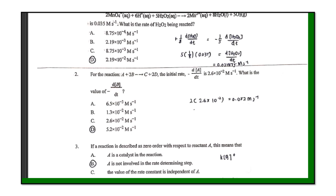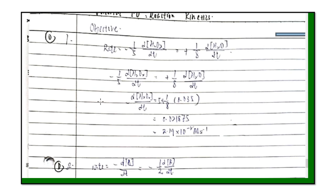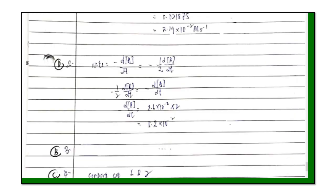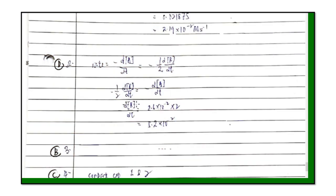The proper answer should show: rate = −dA/dt = −1/2 × d[B]/dt, then substitute to find d[B]/dt = 2 × 2.6 × 10⁻² × 2 = 5.2 × 10⁻² molar per second. One student also made a mistake by forgetting to write the unit. Be careful — you must write down the unit, which is molar per second, since we are dealing with rate and the unit of rate is molar per time.